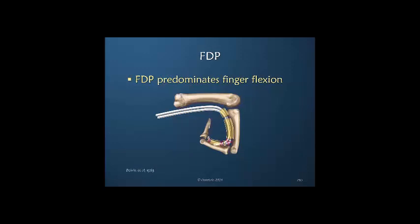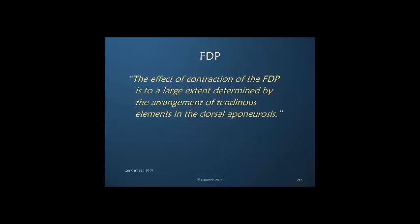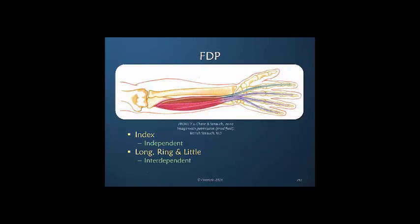The profundus is the dominant flexor of the finger. The superficialis is more erratic and does not always strongly participate in active finger flexion. Langemere told us that the effect of contraction of the flexor digitorum profundus is to a large extent determined by the arrangement of the tendinous elements in the dorsal apparatus — that dorsal apparatus must move to allow the flexor to fully flex the finger. The index finger tends to be more independent both anatomically and cortically, while the long, ring, and little fingers have a common muscle belly and are interdependent, with shared lumbricals demanding that these three fingers always work in unison.